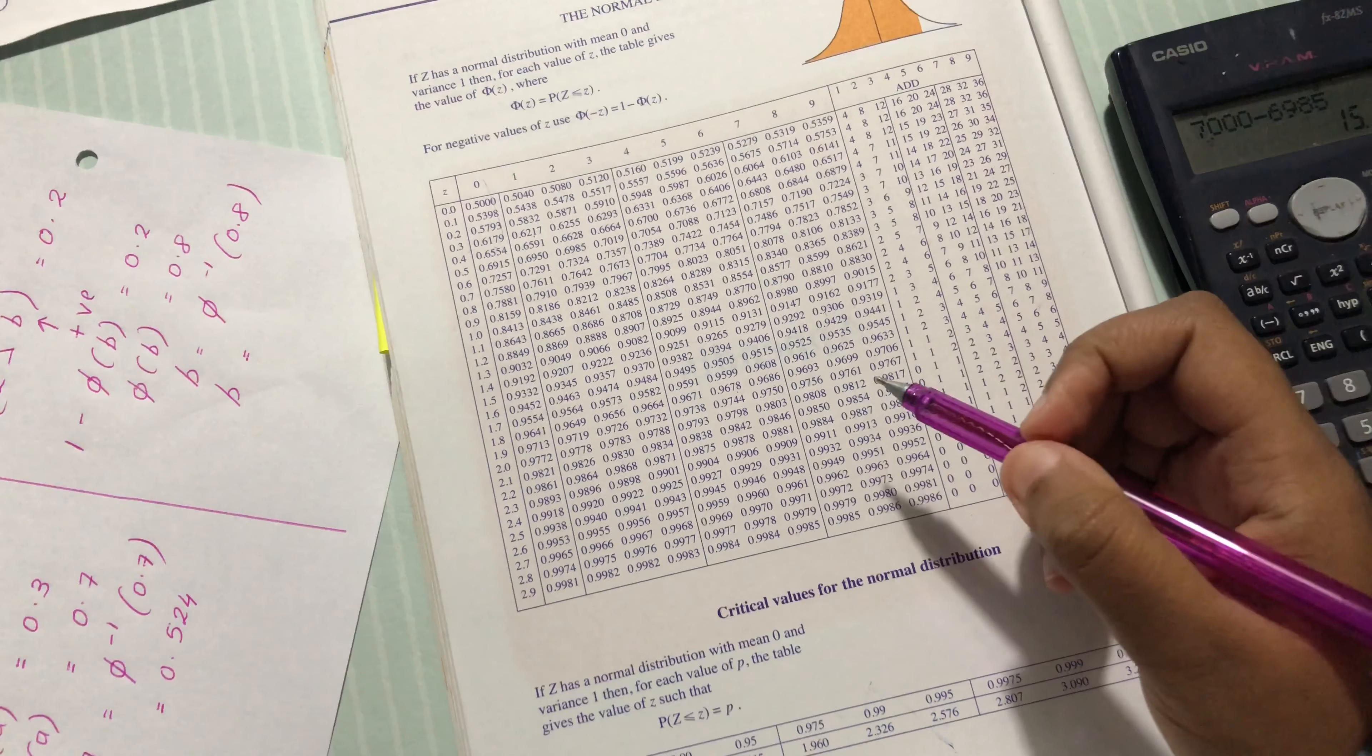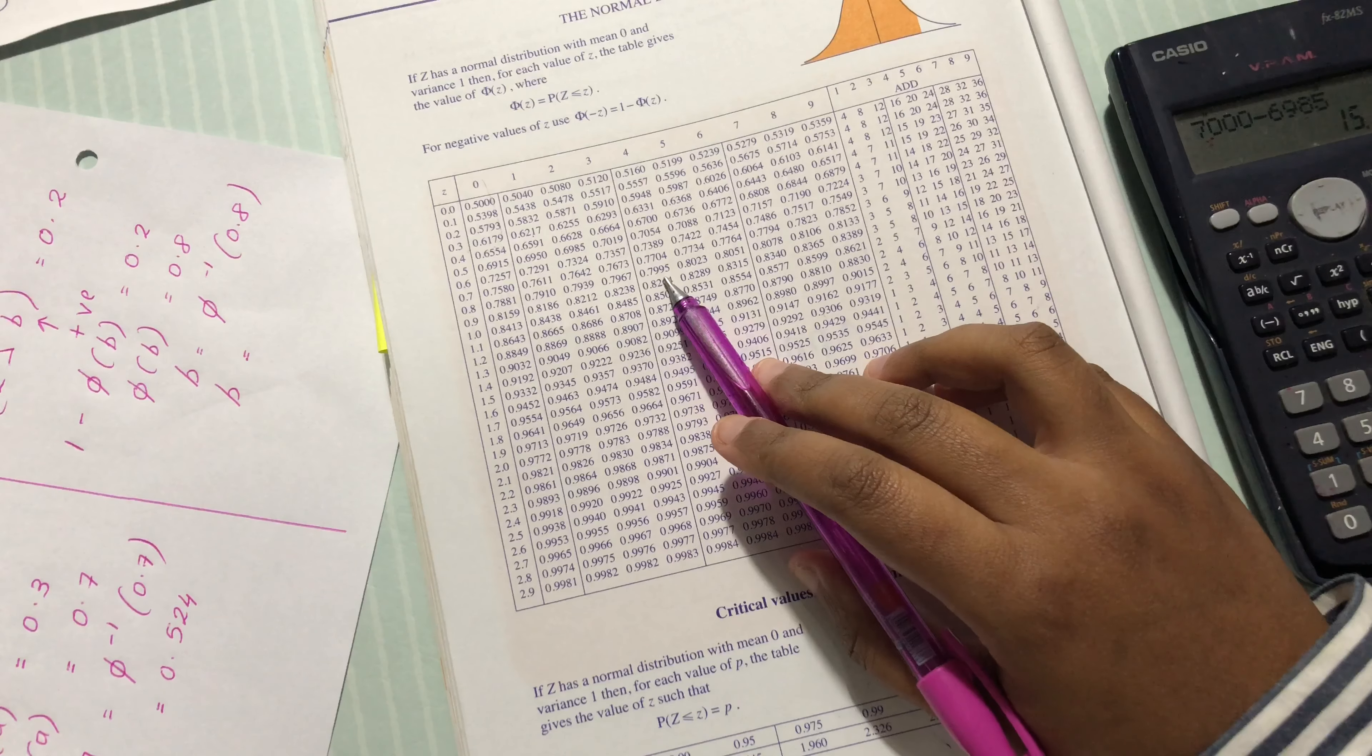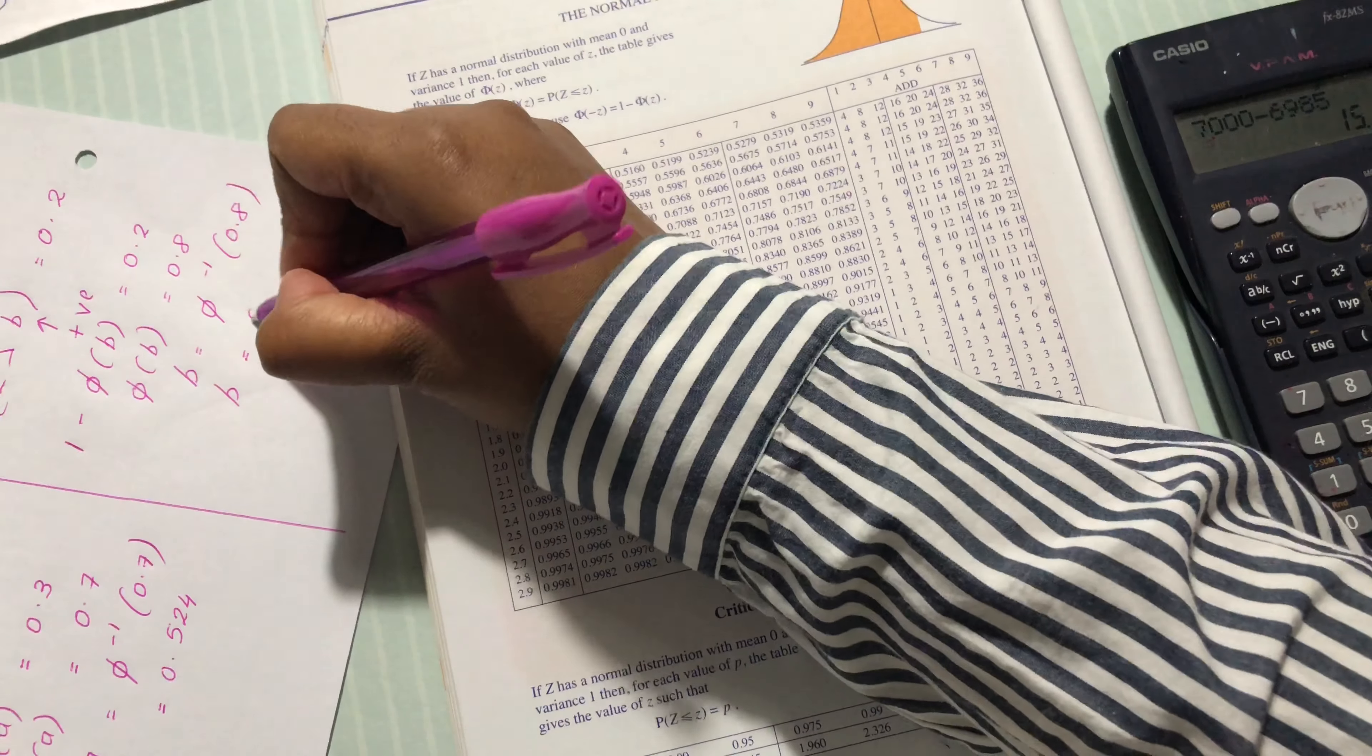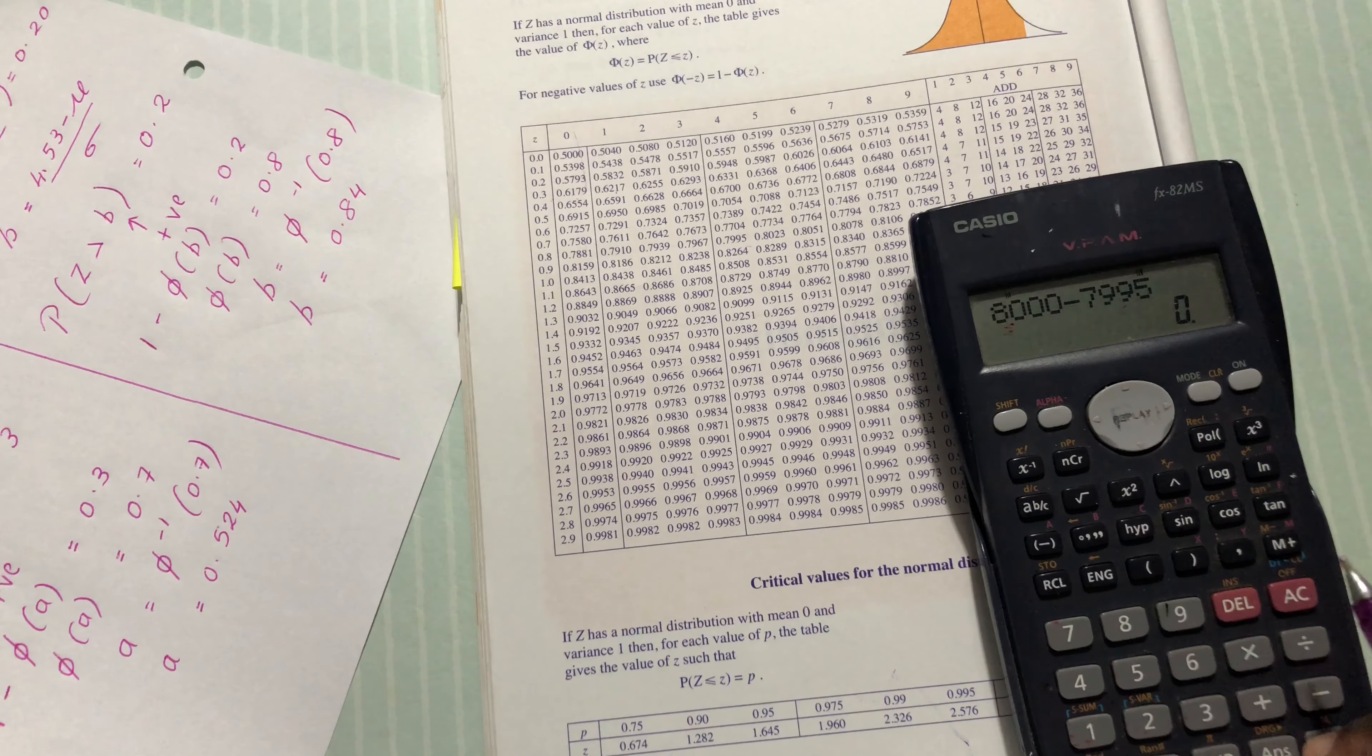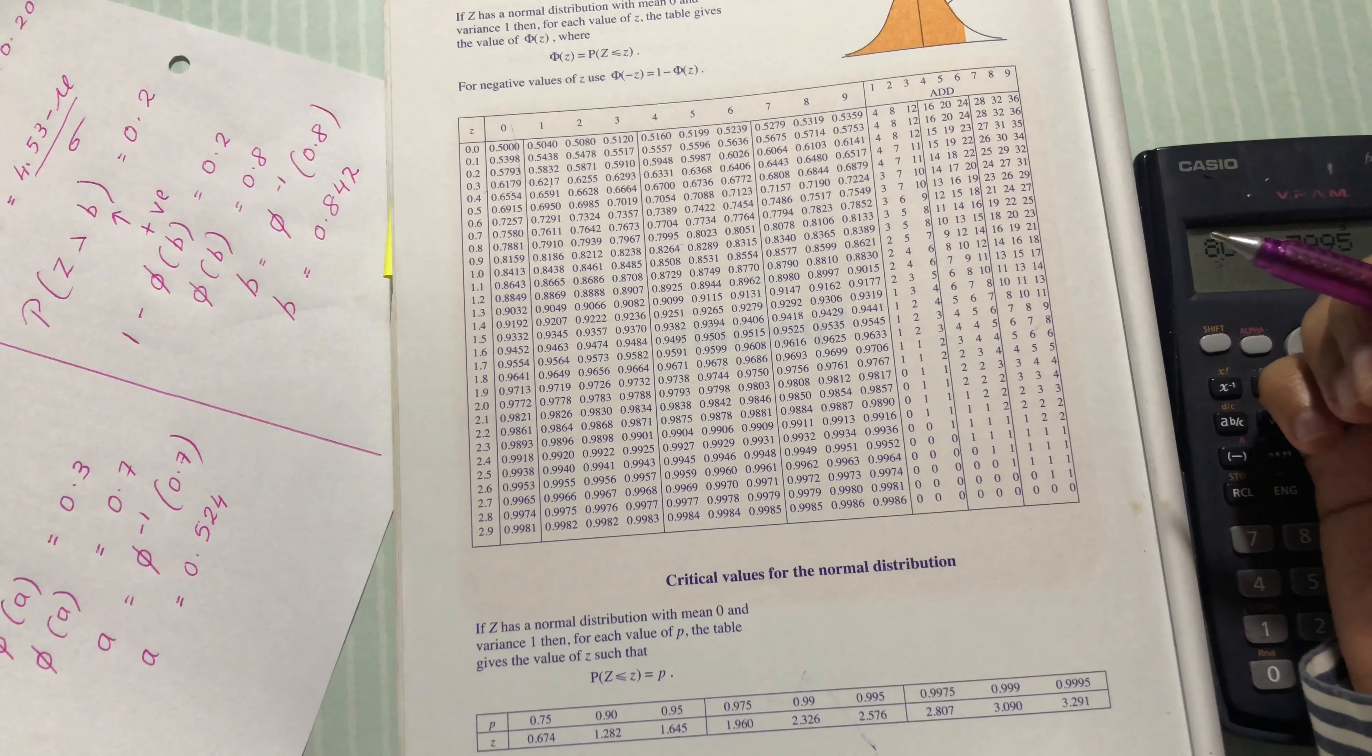Now 0.8. Again, we do not have the exact value. We're going to take a value below 0.8, which is 0.7995. So it is the same as 0.84. We have 5, 2. So b equals 0.842. Now we have a and b.